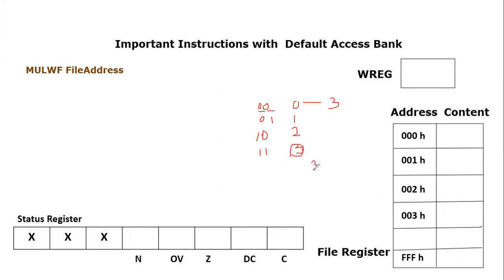Let's say we multiply three by three. The result would be nine. In binary, three is 11, and three is 11. When we multiply them, we get nine. If you convert nine to binary, it is 1011 — four bits are used. So when you multiply a two-bit number with another two-bit number, the result can be a four-bit number.